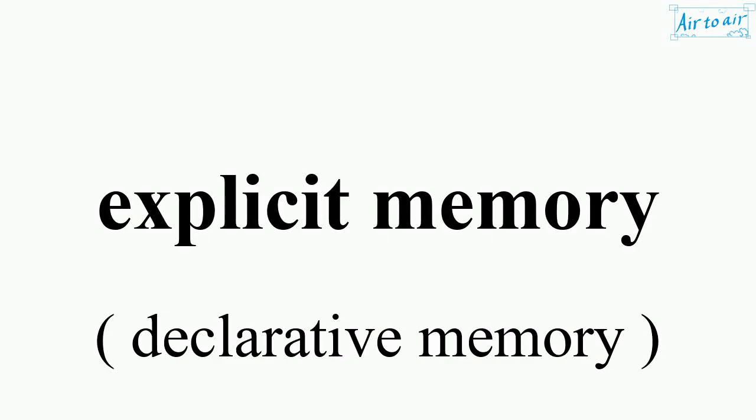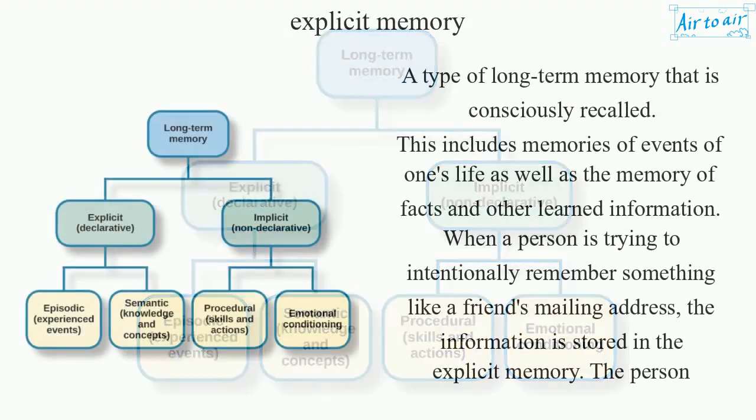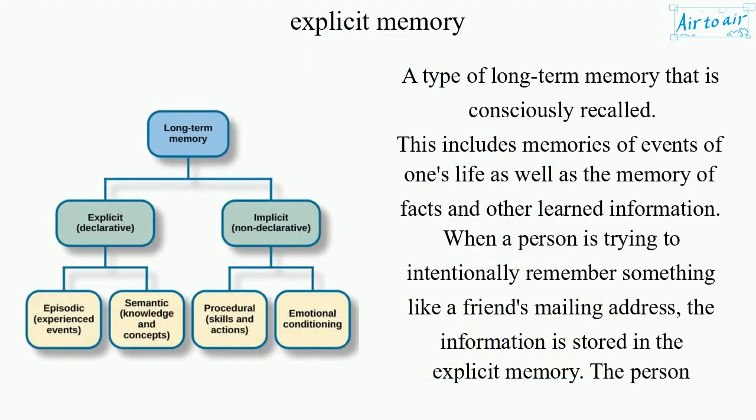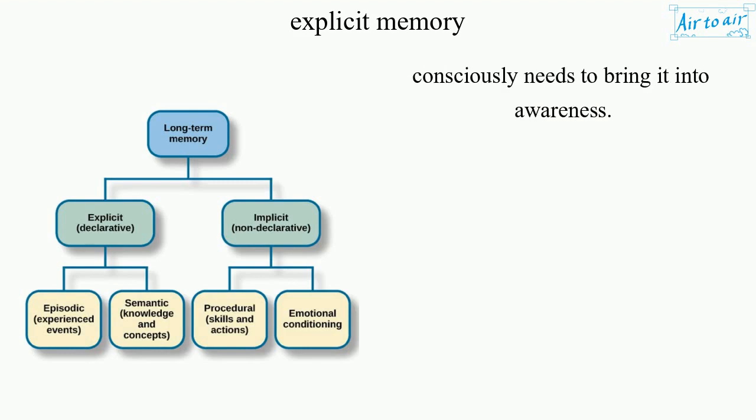Explicit memory is a type of long-term memory that is consciously recalled. This includes memories of events of one's life as well as the memory of facts and other learned information. When a person is trying to intentionally remember something, like a friend's mailing address, the information is stored in explicit memory — the person consciously needs to bring it into awareness.